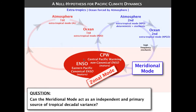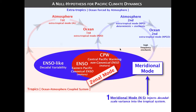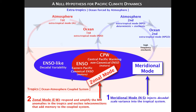Our hypothesis is that the meridional mode injects decadal-scale variance into the tropical system and is responsible for this ENSO-like decadal variability, essentially by igniting zonal mode dynamics. The zonal mode then responds and amplifies the meridional mode anomalies in the tropics and excites teleconnections that add further memory to the extratropical coupled system.